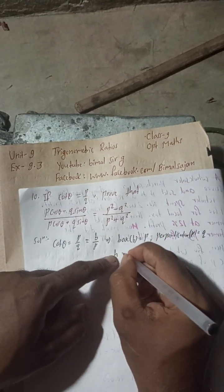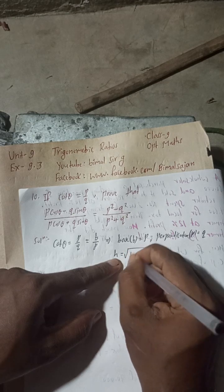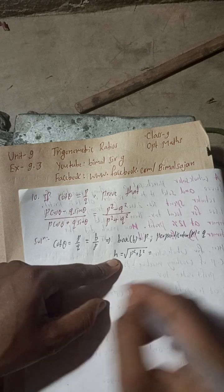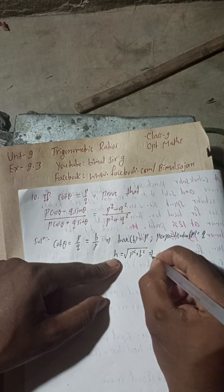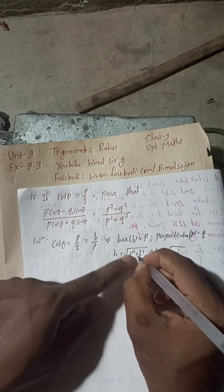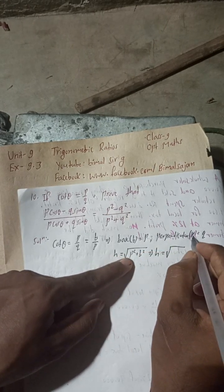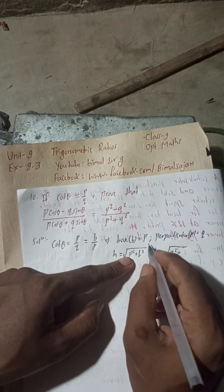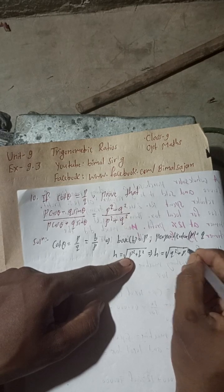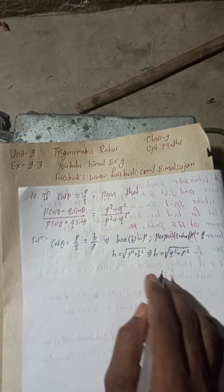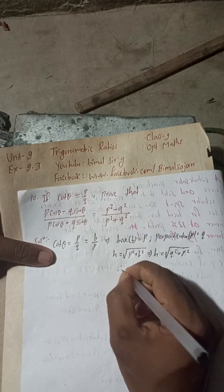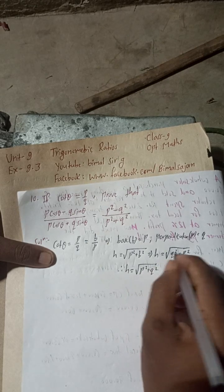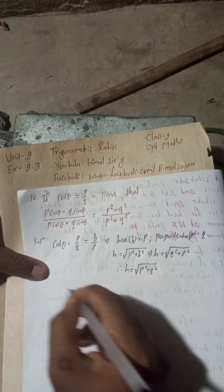The hypotenuse h equals the square root of (base squared plus perpendicular squared), which is root under p squared plus q squared. Therefore, h equals root under p squared plus q squared.